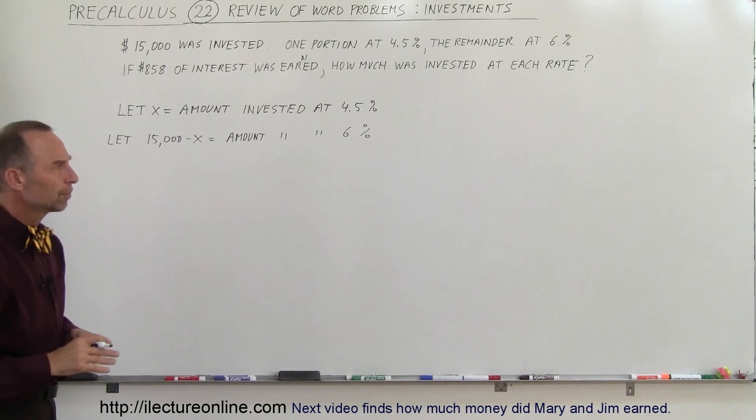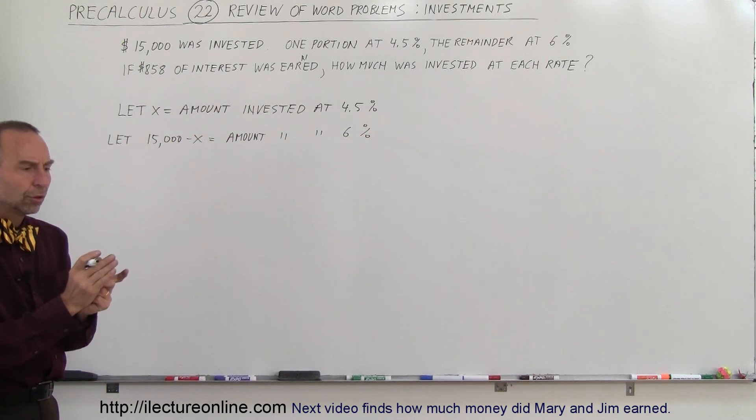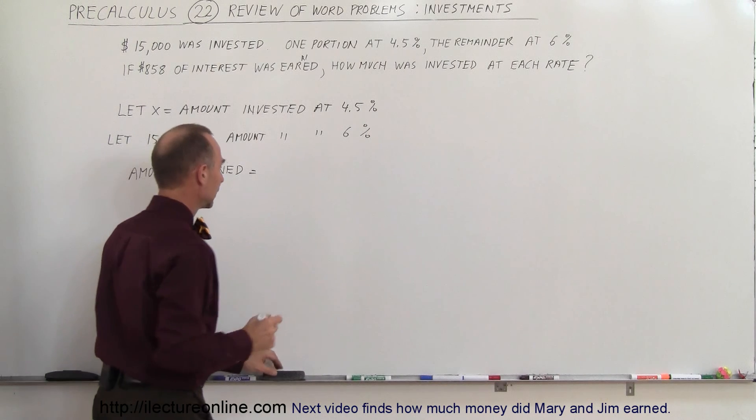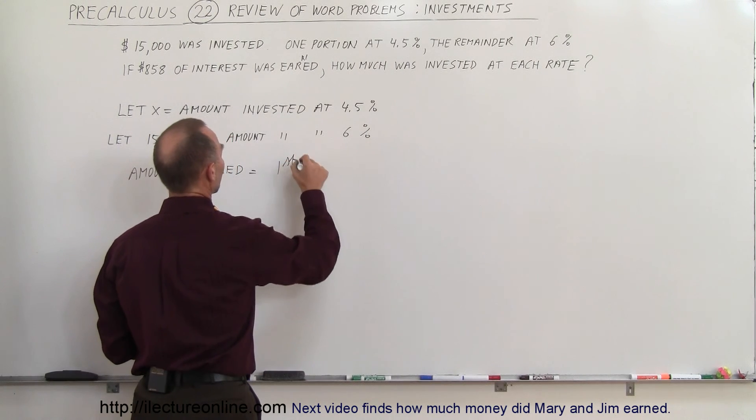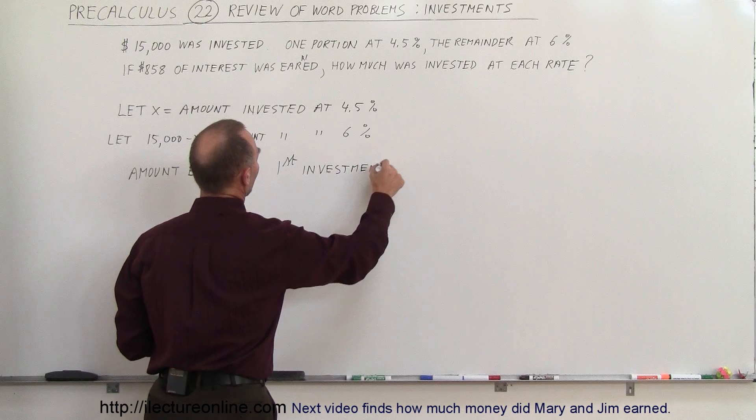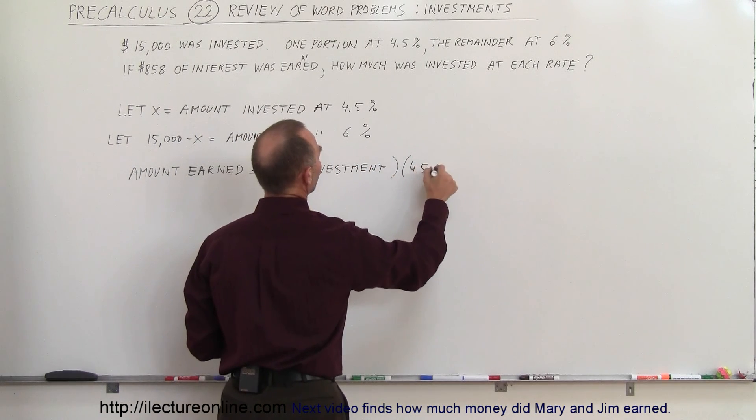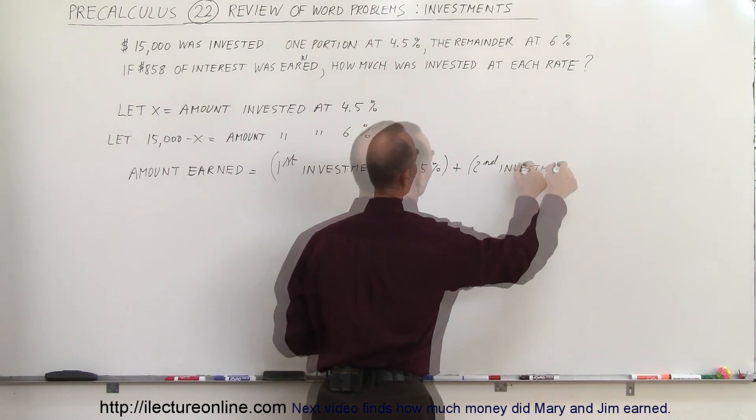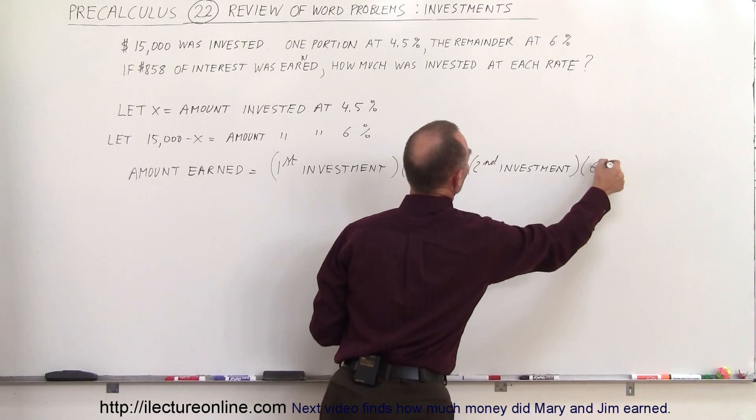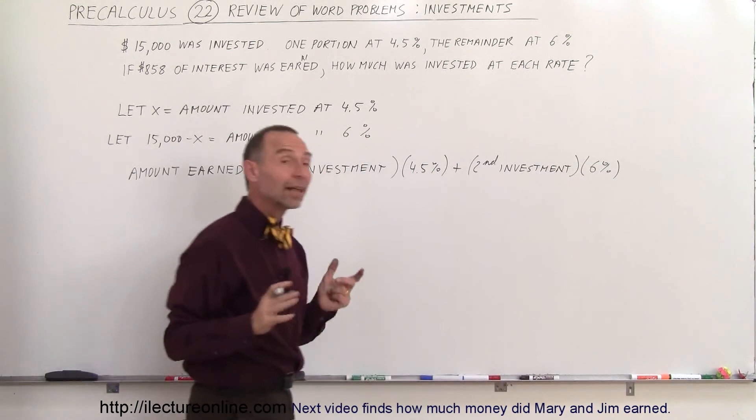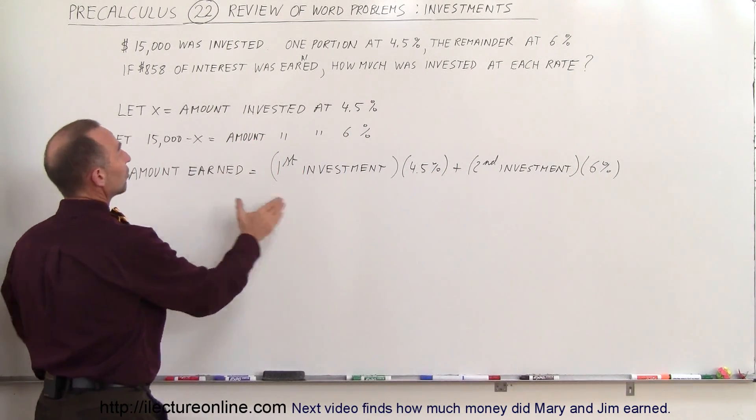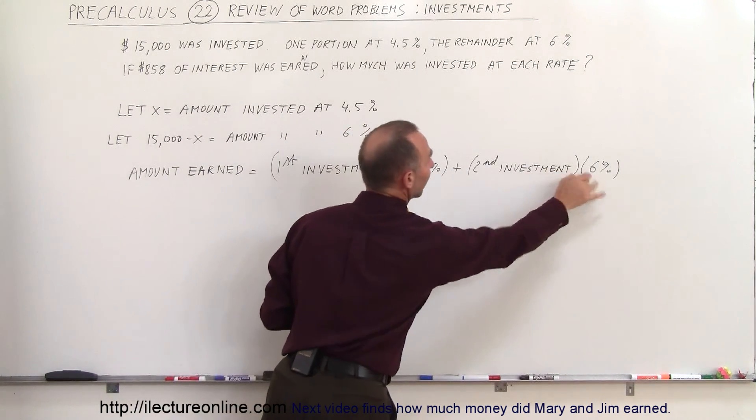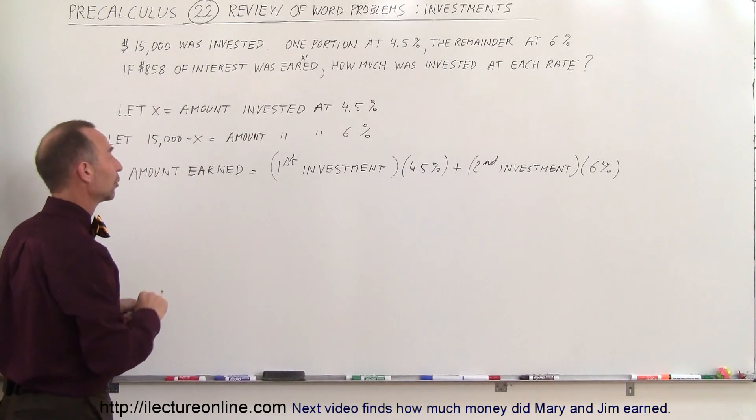Now we need an equation. The amount earned should equal what? So the amount earned is equal to the first investment times 4.5% plus the second investment times 6%. So now that's our equation. The amount that we earn in interest is the amount we invested at 4.5% times 4.5% plus the amount invested at 6% times 6%. That will give us the amount earned from our total investment.